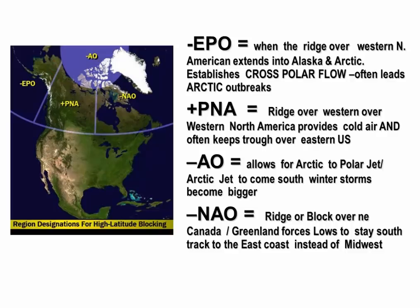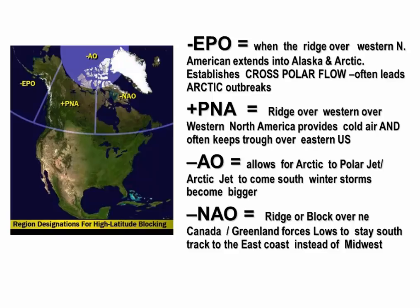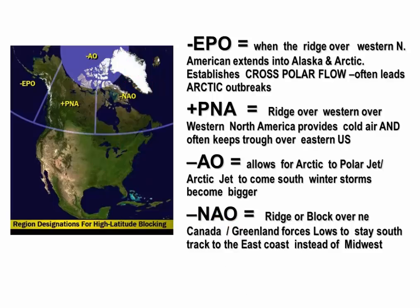The phasing brings in cold air and allows big storms to develop. Finally, the negative NAO — the North Atlantic Oscillation — is located over northeastern Canada and Greenland. When it's negative, low pressure areas have to stay south because there's a blocking ridge in the jet stream. When the NAO is positive, you have low pressure in Greenland at upper levels and the low pressure tracks into the Midwest or Appalachian Mountains. That's why a negative NAO over northeastern Canada and Greenland is good for winter storms.